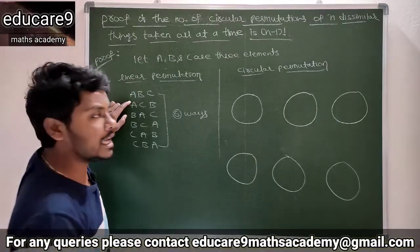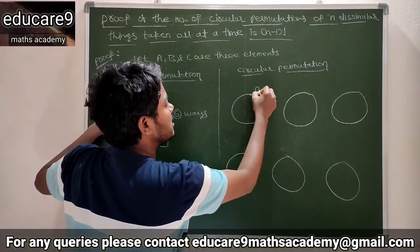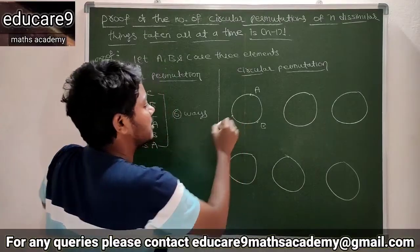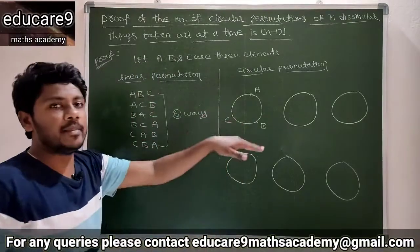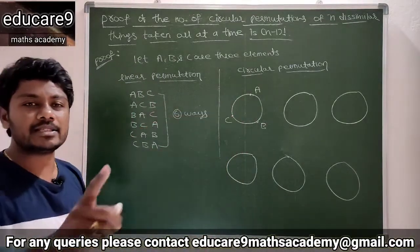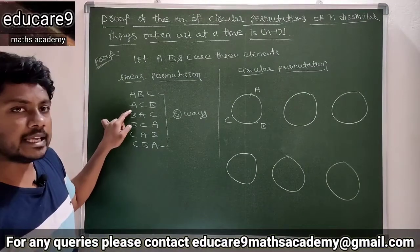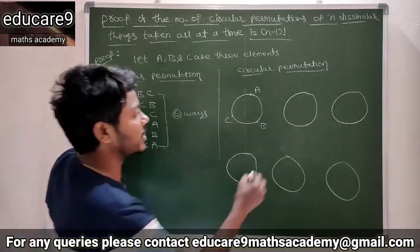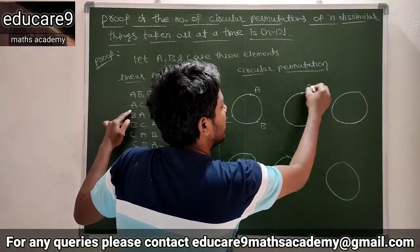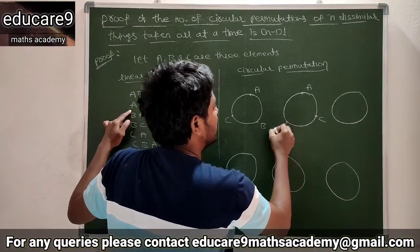Write the elements. The first arrangement is A, B, C. This is A, and this is B, and this is C. The elements arranged around a circuit is called circular permutation. Next one: A, C, B element. So this is A and this is C and this is B.